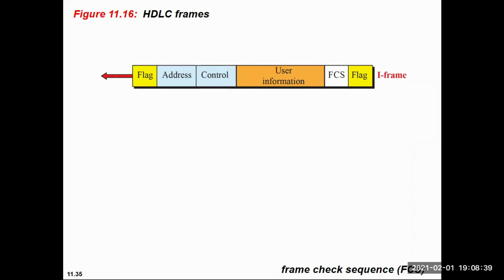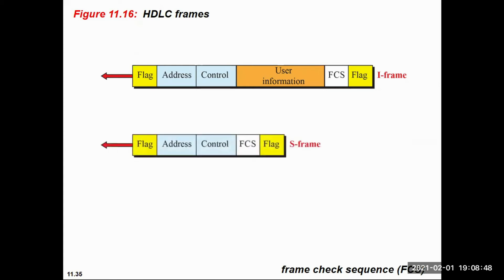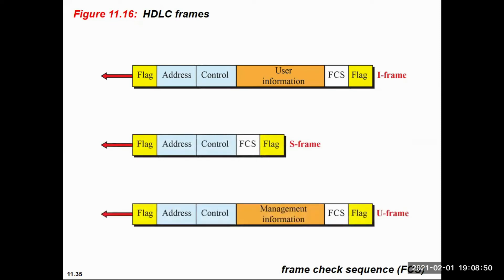The frame diagram shows the I-frame, S-frame, and U-frame structures. The first and last entity in each frame is the flag. The flag is a unique 8-bit word pattern — 0, then six 1s, then 0 again — which identifies the start and end of a frame.